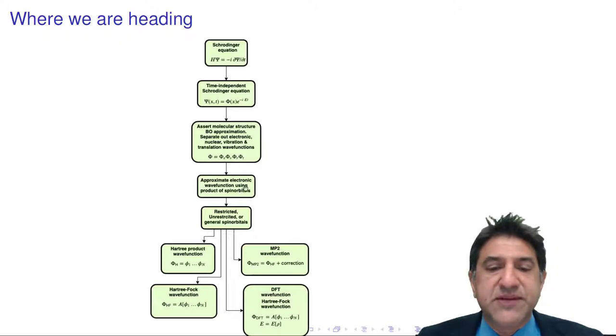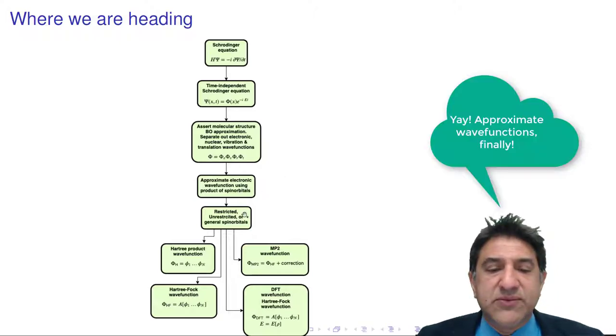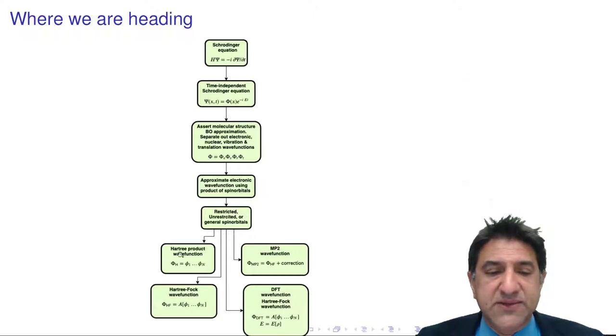So here we're talking about approximate wave functions and we're going to talk about the different types of simple wave functions such as the Hartree-Product wave function, the Hartree-Fock equation, which is an anti-symmetrized version of the Hartree-Fock. We will talk a little bit about DFT wave functions but not much and finally MP2 wave functions.